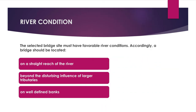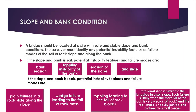The selected bridge site must have favorable river conditions. Accordingly, a bridge should be located on a straight reach of the river, beyond the disturbing influence of larger tributaries, and on well-defined banks. A bridge should also be located at a site with safe and stable slope and bank conditions. The surveyor must identify any potential instability features or failure modes of the soil or rock slope and along the bank.